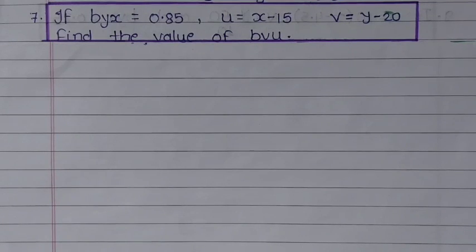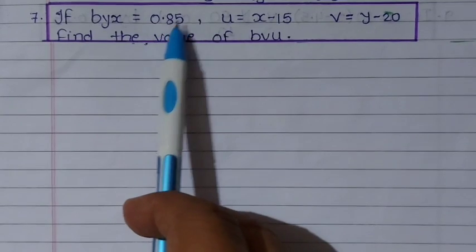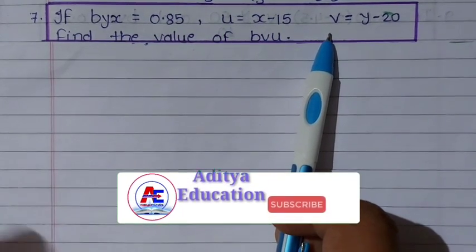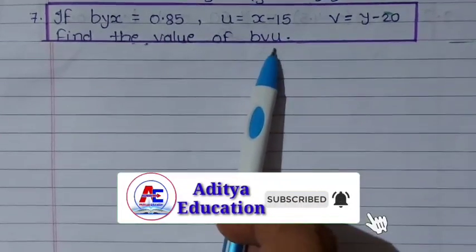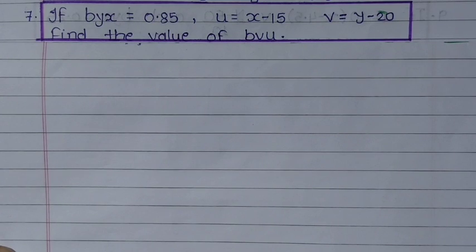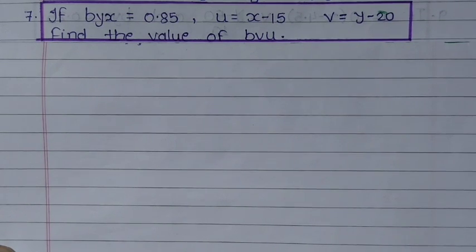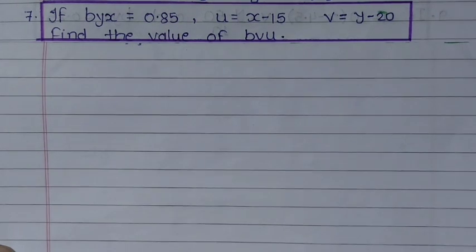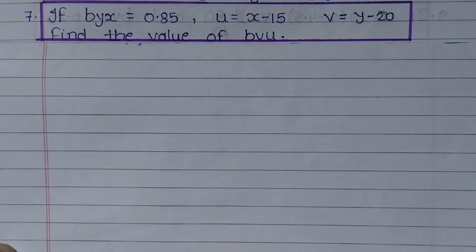Sum number 7: if byx = 0.85, u = x - 15, v = y - 20, find the value of bvu. This type of question is asked many times in board exams, so please pay attention. हमने long sum solve करते समय देखा था कि जब हम uv formula apply करते हैं, तब bvu को byx में convert करने के लिए हम formula में cy/cx का multiplication करते हैं। Regression coefficient is independent of change of origin, but not of change of scale — means अगर divide या multiply करते हो तो formula में उसकी effect दिखानी होती है।